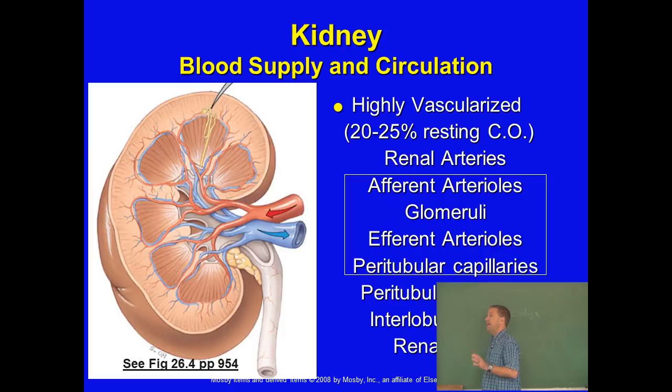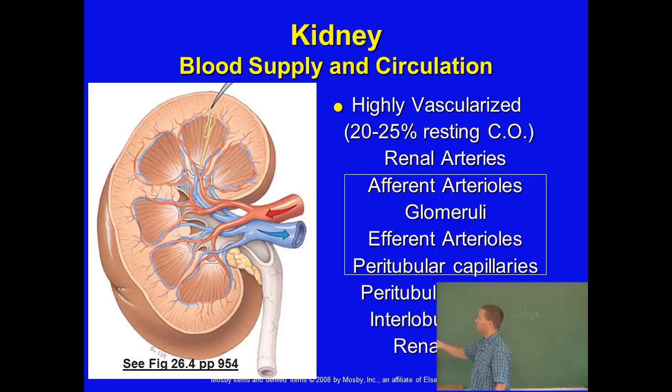The kidney has a tremendous blood supply — in most mammals, about 25% of the cardiac output is devoted to the kidneys. The renal arteries bring blood to the kidneys. Within the nephron, the afferent arteriole brings blood into the glomerulus, which is a capillary bed, and then efferent arterioles bring blood away. We also have peritubular capillaries, which we'll discuss in a moment.